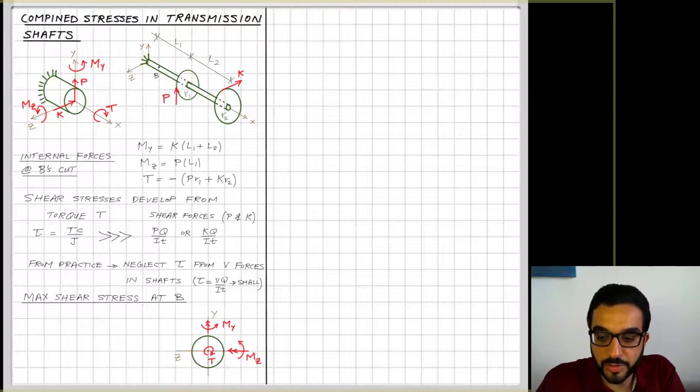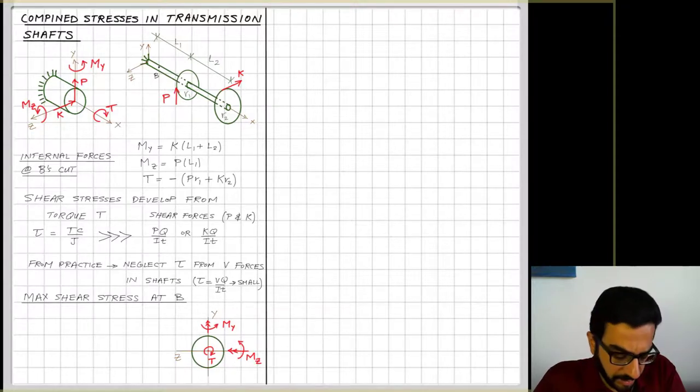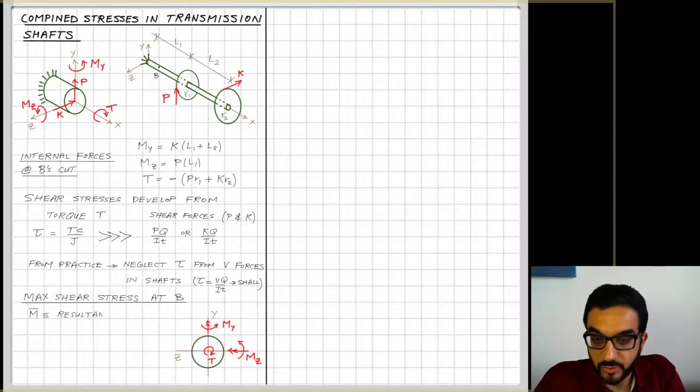So now I ended up with mainly my Mz and the torque, and I'm representing my Mz with this double-headed arrow to help me kind of determine the direction of it using vector notations. So My is a positive moment and Mz is a positive moment.